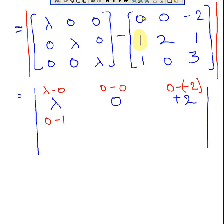Lambda minus 2, let's go with that first. So lambda minus 2 and 0 minus 1, and there we have it again.